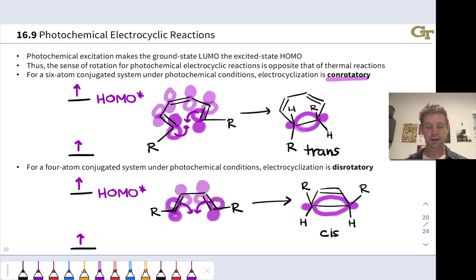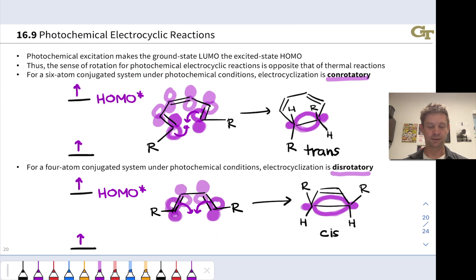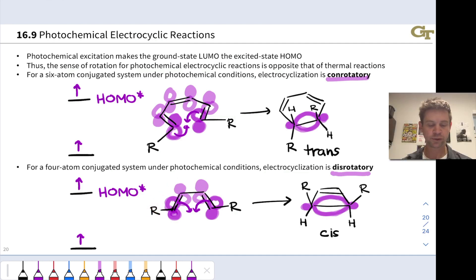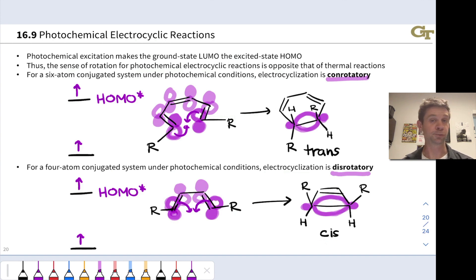Naturally, for the 4-pi case, conditions are disrotatory under photochemical excitation. This is because the LUMO of ground-state butadiene becomes the HOMO* in the photoexcited molecule. The HOMO*/LUMO shape puts us in a disrotatory situation: one lobe rotating clockwise and one rotating counterclockwise to establish constructive overlap. This rotates both R groups upward into a cis orientation when starting from a trans-trans alkene. Switching the configuration of one alkene to a cis arrangement would instead lead to the trans product, because the reaction is stereospecific.